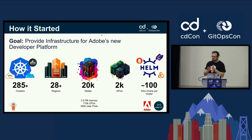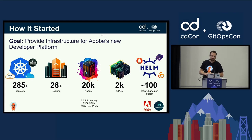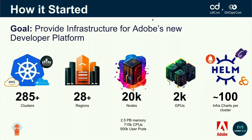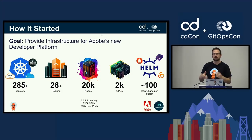The goal was to provide infrastructure for Adobe's new developer platform. Their developer platform has about 285 clusters across 28 regions, 20,000 nodes, about 2,000 GPUs. You need to install about 100 Helm charts per cluster — things like Prometheus, Grafana, and all the other tooling the infrastructure team needs present on each cluster. This is a baseline; in fact it's grown since then, getting close to a million CPUs. There are a lot of developers involved, so there's a chance to do a lot of impact.